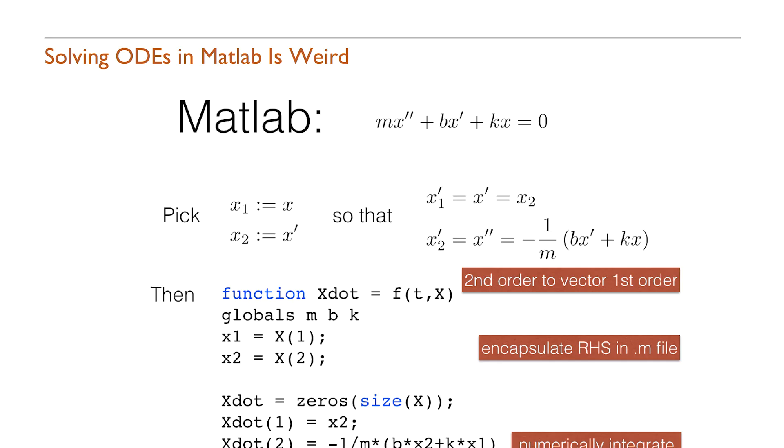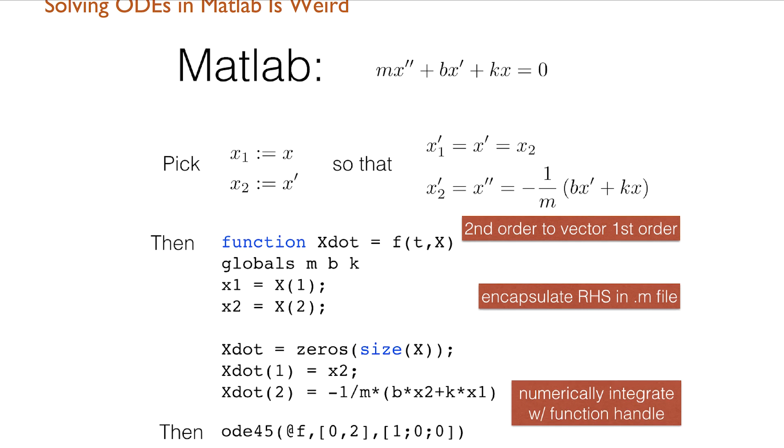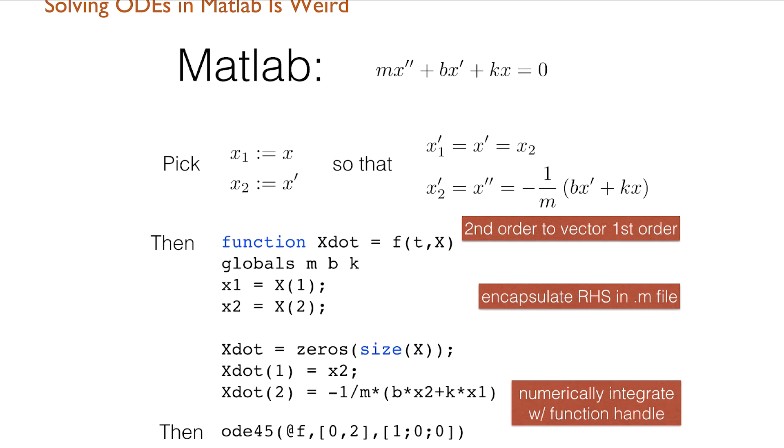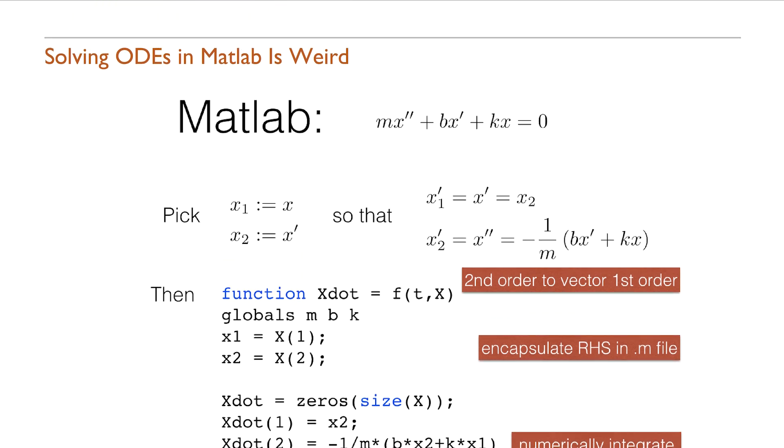They had to contort their thinking into a form that MATLAB could understand. For instance, with ordinary differential equations, you can't just tell MATLAB to solve the differential equation. You have to boil down the nth order equation into a vector first-order equation, you have to make a separate m-file that encodes the right-hand side, you have to call this specially named function that has some weird numbers in it — and it's really confusing for students because it doesn't look anything like what they learned in their math classes.